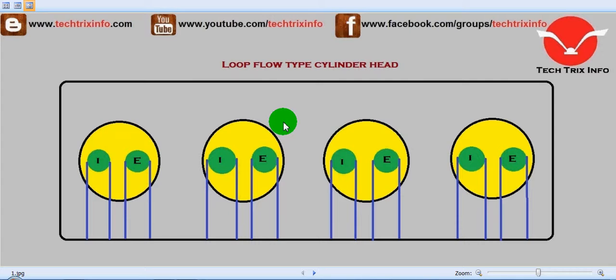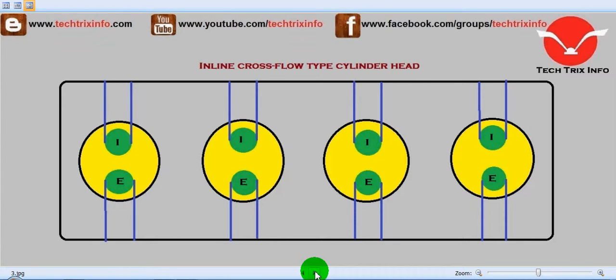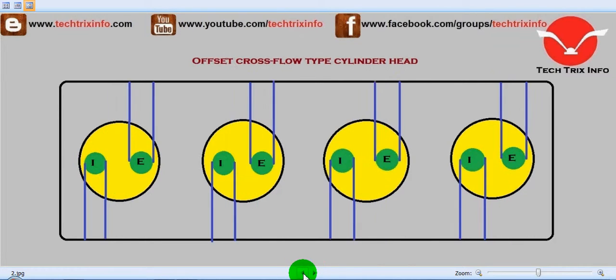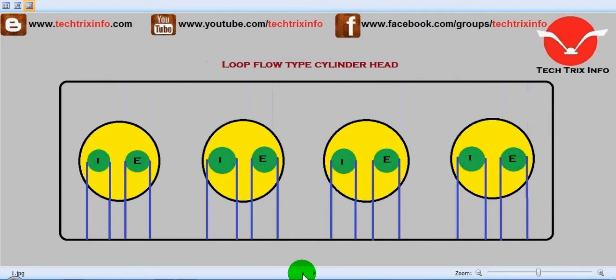We can mainly classify the cylinder heads into three types: the loop flow type cylinder head, the offset cross flow type cylinder head, and the inline cross flow type cylinder head. With the help of this animation we will be explaining these three types.